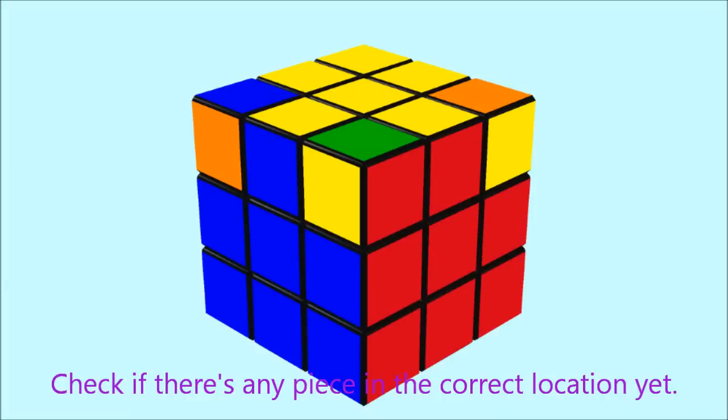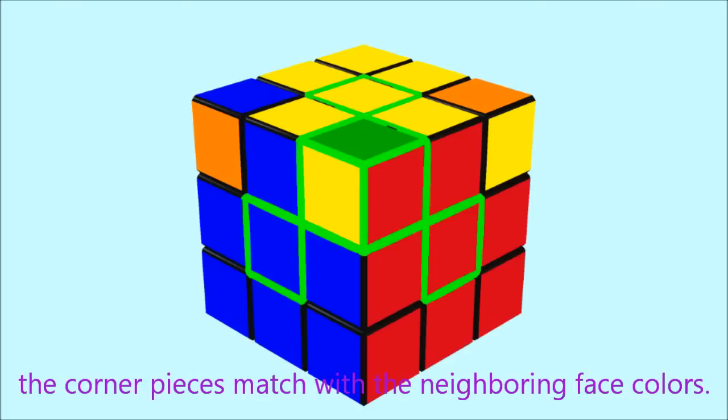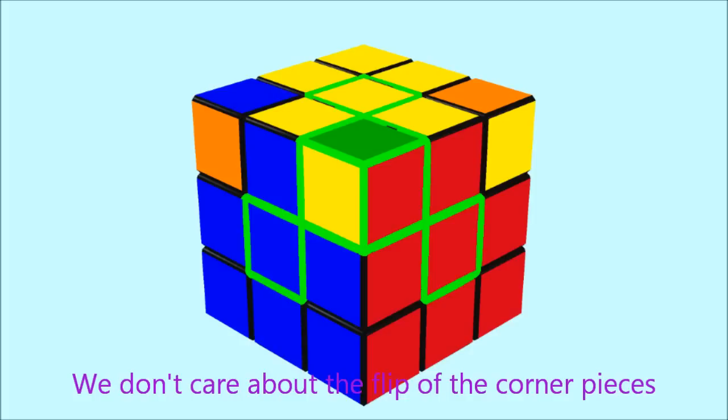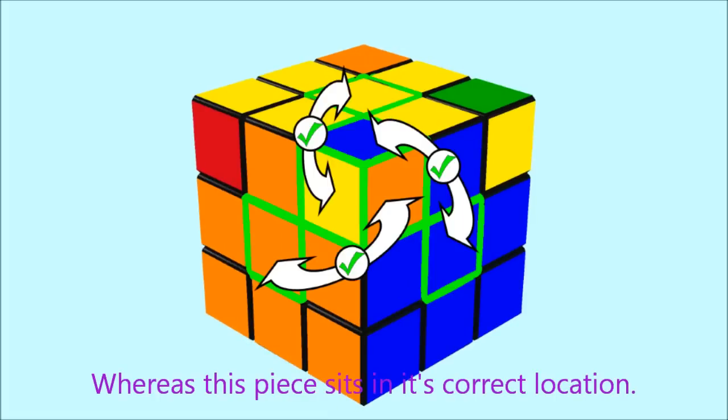Check if there's any piece in the correct location yet. Again, this means the colors of the stickers of the corner pieces match with the neighboring face colors. We don't care about the flip of the corner pieces at this point. This piece for example is wrong, whereas this piece sits in its correct location.